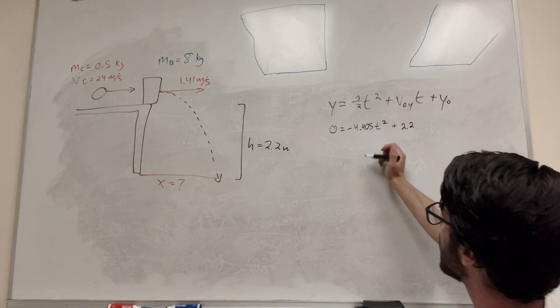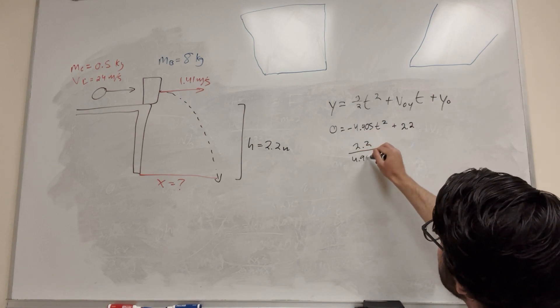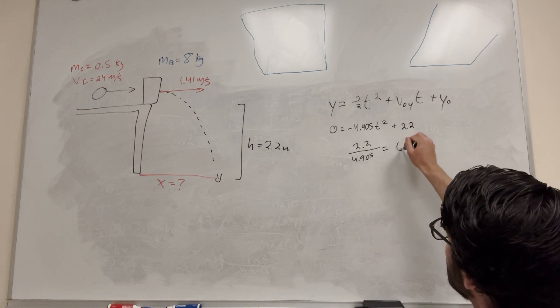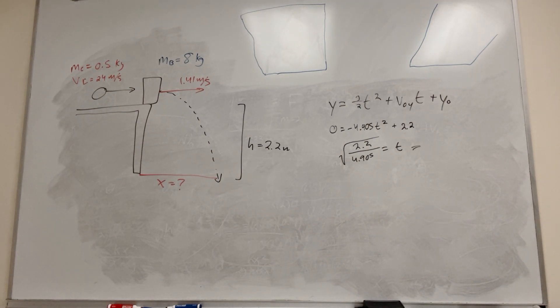And then plus y naught. So y naught is 2.2 meters. So of course you subtract it over and the negatives cancel. So it's going to be 2.2 divided by 4.905 is equal to t squared. But if you take the square root of it, you'll just get t is equal to that. And this is going to take 0.67 seconds. So it takes 0.67 seconds to fall to the ground.